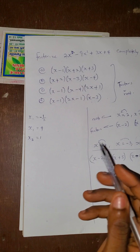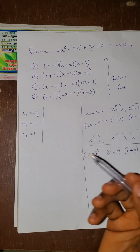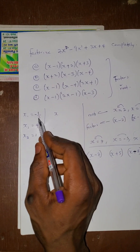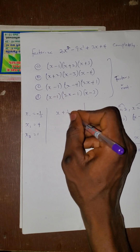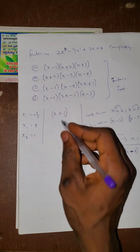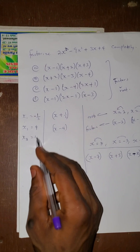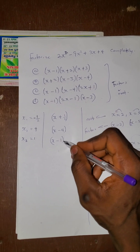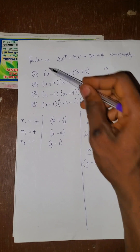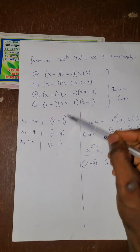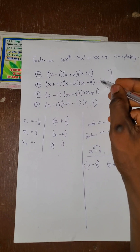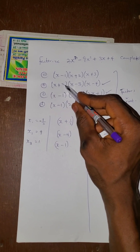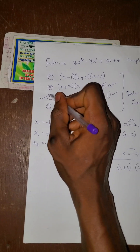Now let us convert the roots to factors. We got the roots from the calculator. For x1 equals minus 1 over 2, taking it inside gives (x plus 1 over 2). For x2 equals 4, it becomes (x minus 4). For x3 equals 1, it becomes (x minus 1). So we have the factors (x plus 1 over 2), (x minus 4), and (x minus 1). Looking at the options, we can see that option C contains both (x minus 1) and (x minus 4), so option C is correct.